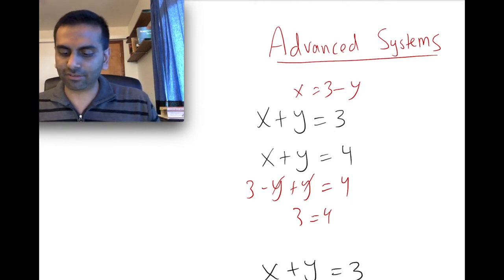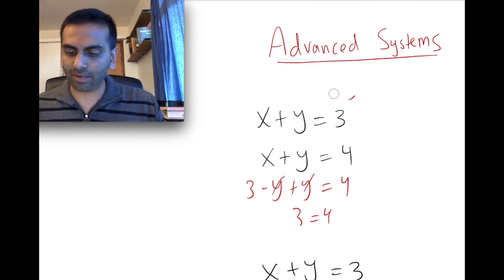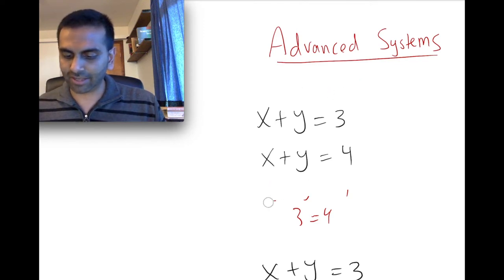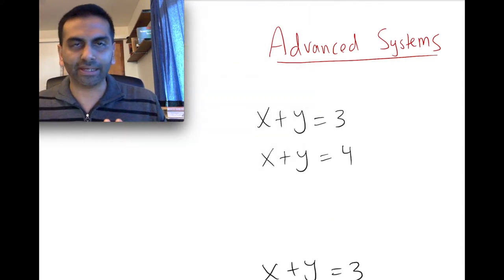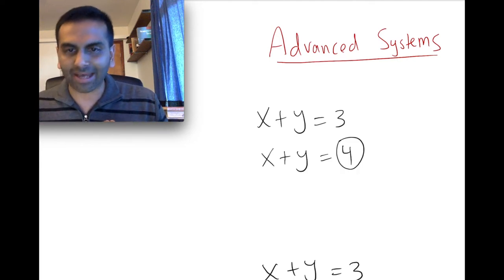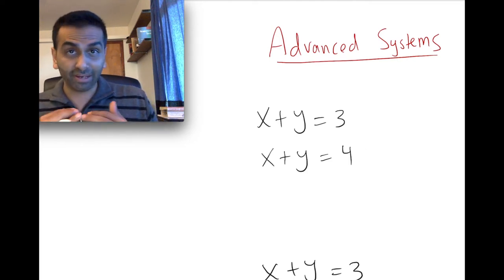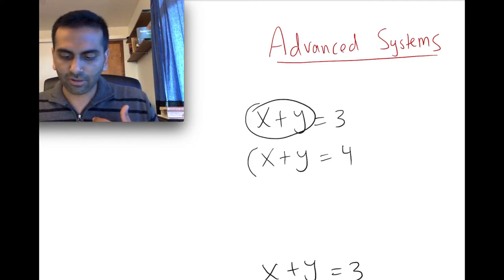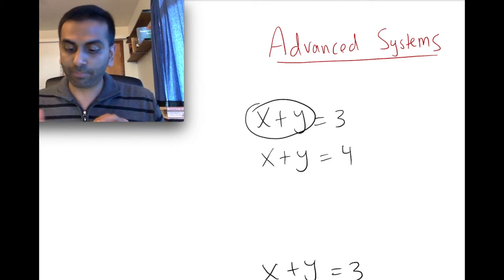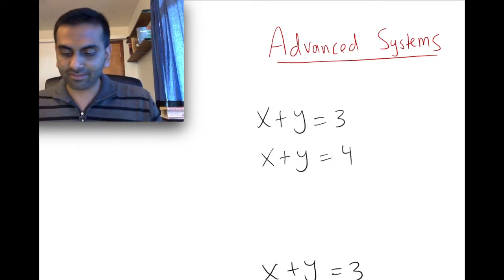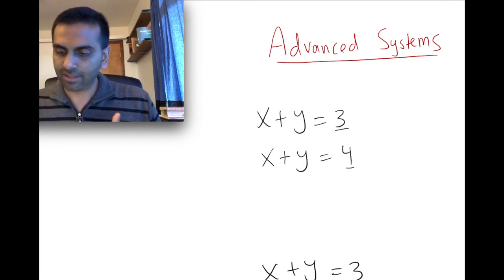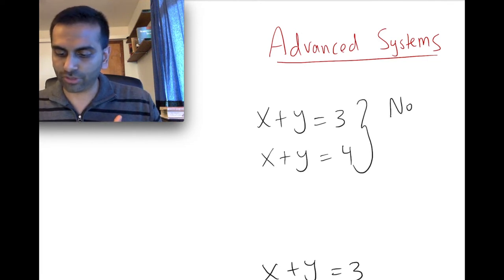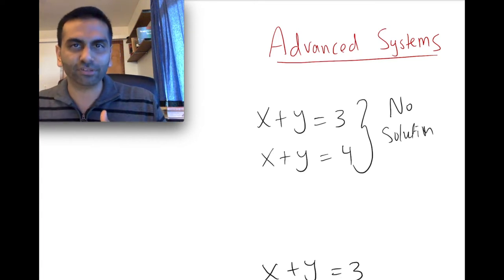In a way you didn't actually need to do this math — this was obvious just looking at the problem. If x and y add up to 3, that same x and that same y can't also add up to 4. So basically whenever you have a system like this where the variables on one side for both equations end up equaling different numbers, there is no solution — no pair x, y that makes both equations true.